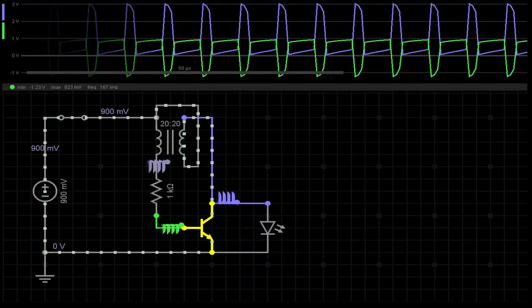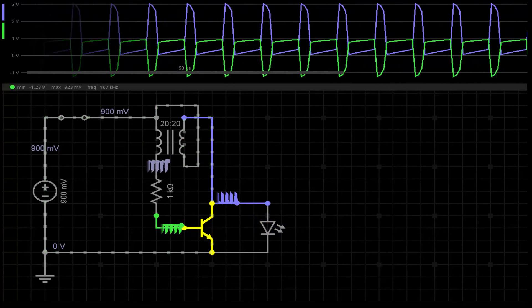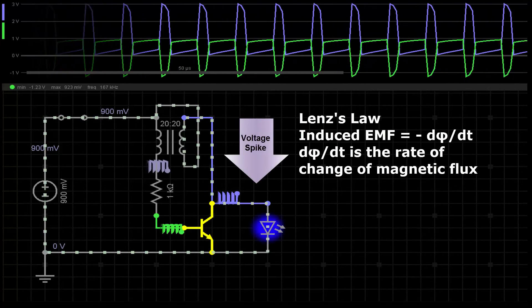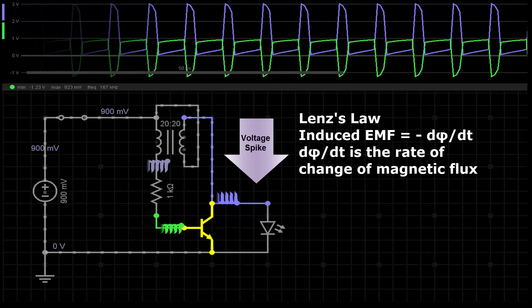The green plot shows the voltage at the base. As the current stops flowing, the magnetic field collapses and this causes a high voltage spike. And as the transistor is turned off,